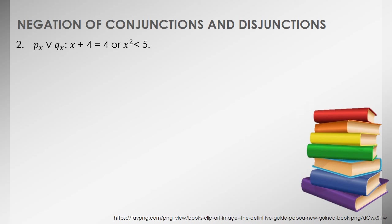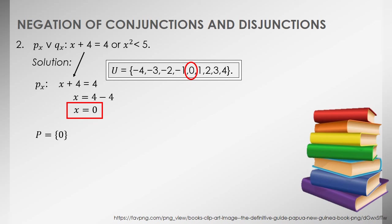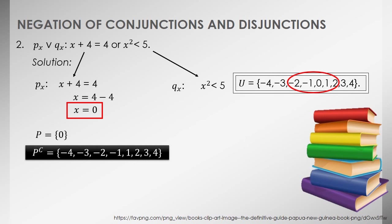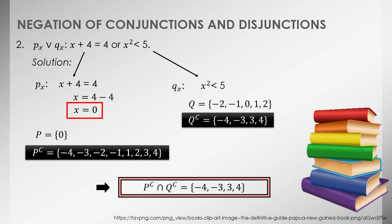The second statement is a disjunction. Working on P first — a linear equation — we obtain x = 0. Considering the universal set, we find 0, so P = {0} and P complement is determined. For Q, we substitute each value within the universal set, finding those values that make the statement true, giving us set Q and its complement Q complement. Finally, we have the truth set for the negation of the second statement.